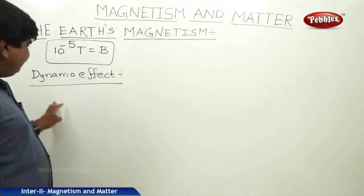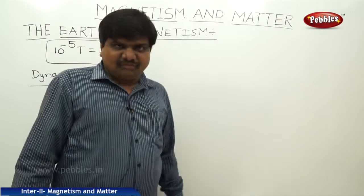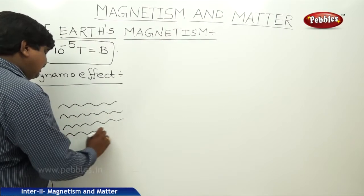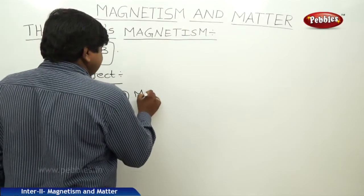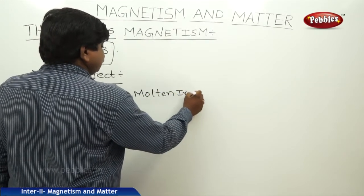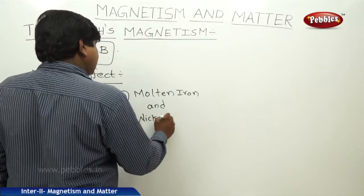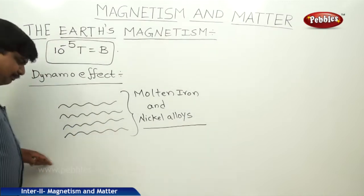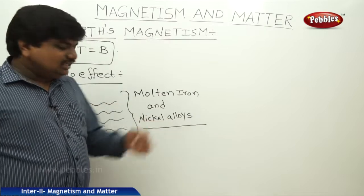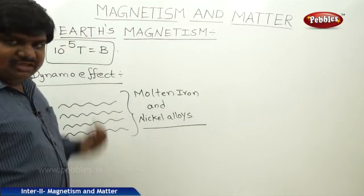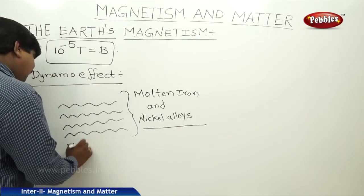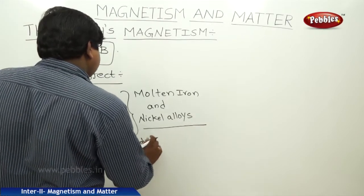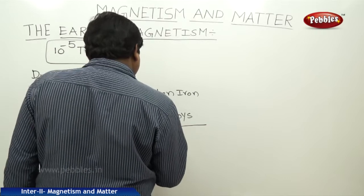The dynamo effect gives a simple explanation of the magnetic behavior of the earth. The interior of the earth contains a lot of minerals and metals. The interior contains molten iron and nickel alloys. These metallic fluids rotate from one interior part of the earth to another, carrying charge. This movement of charge leads to a force of attraction, which is nothing but the magnetic behavior. These metallic fluids produce the magnetism.